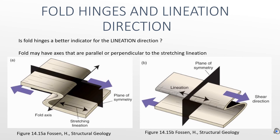While in picture B, the plane of symmetry is perpendicular to the lineation direction. So it is always unclear — it's ambiguous. We are not sure if the fold hinge is a better indicator.